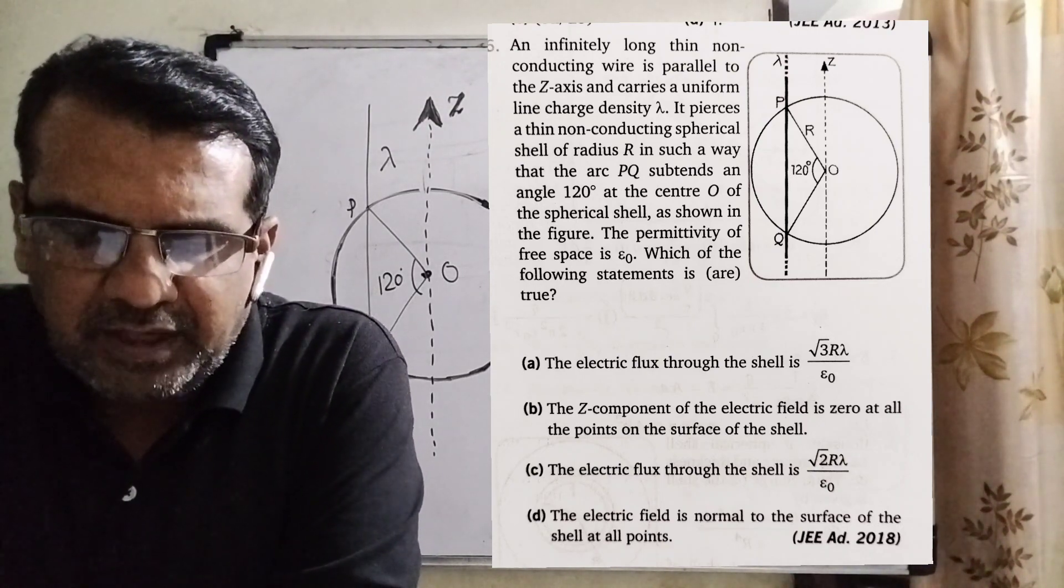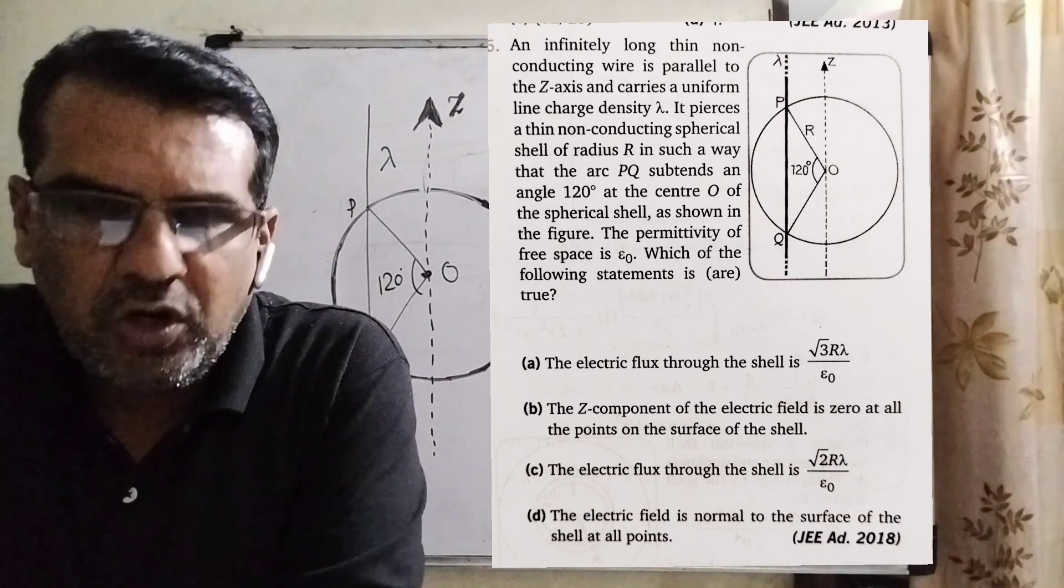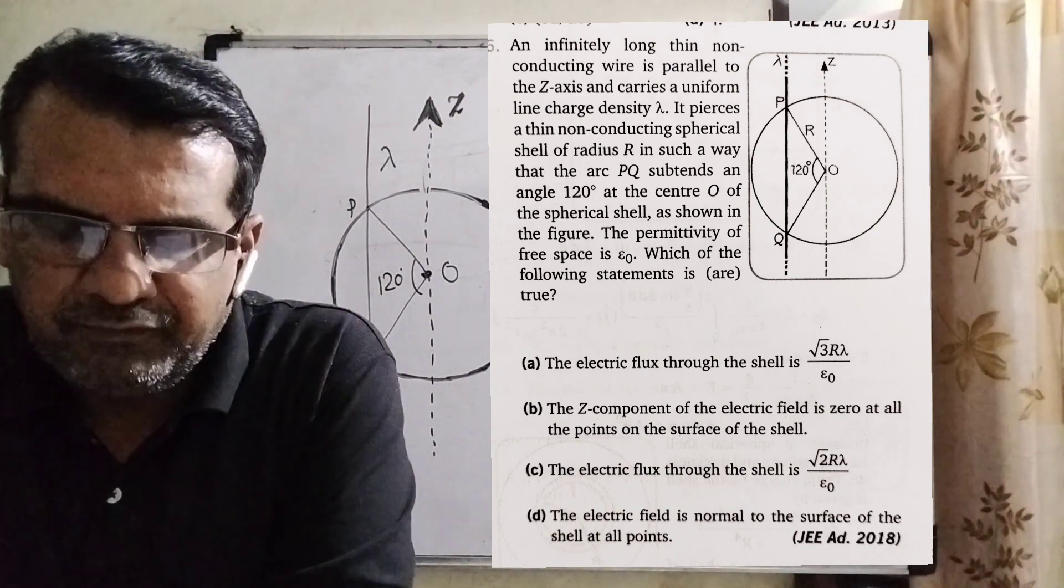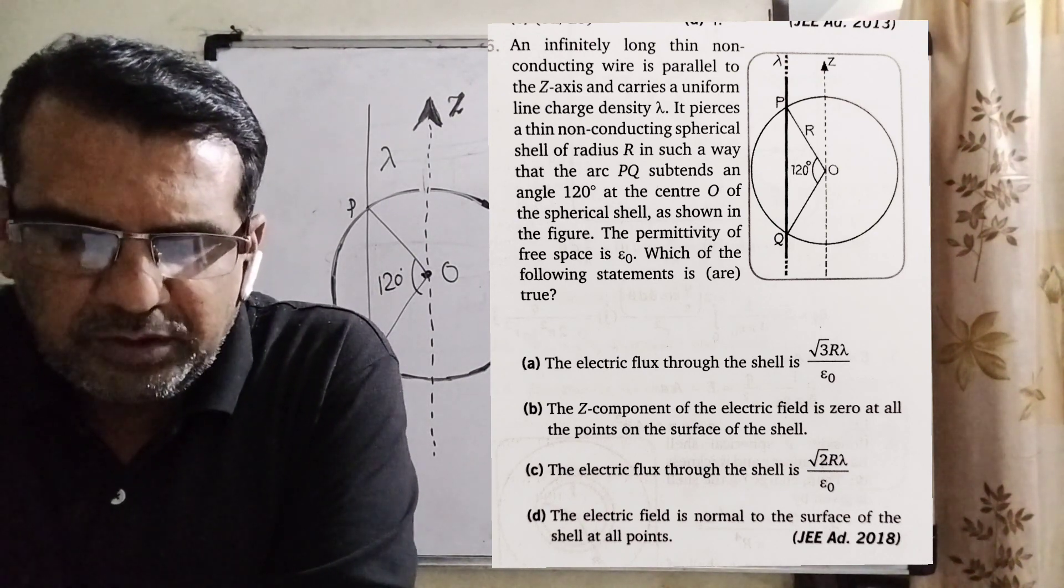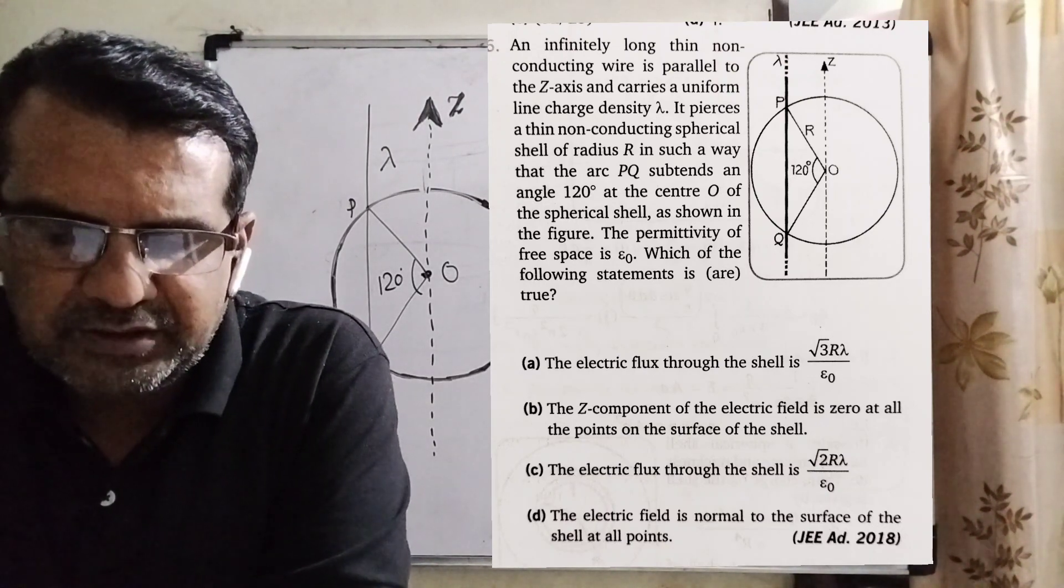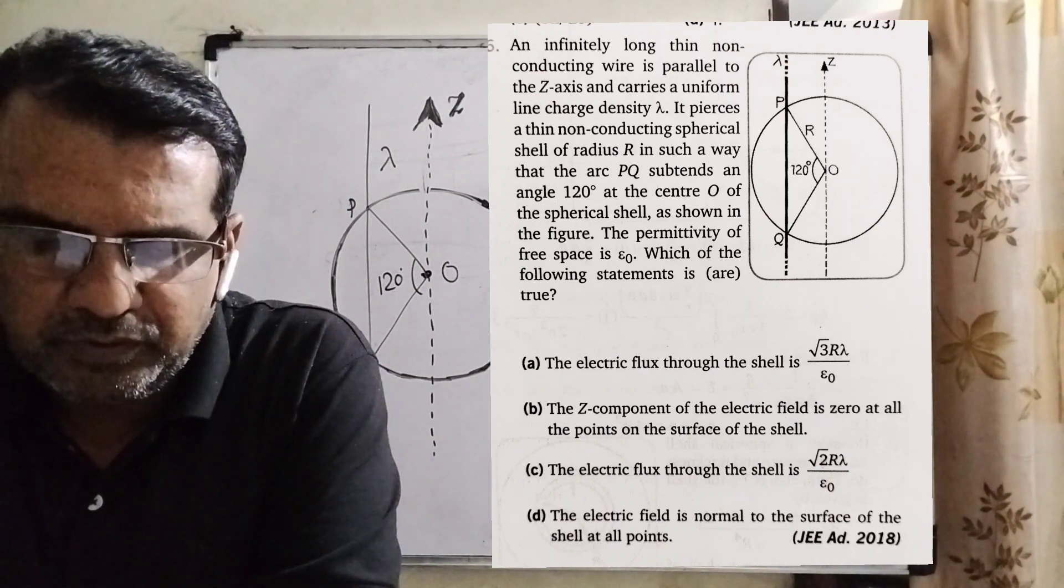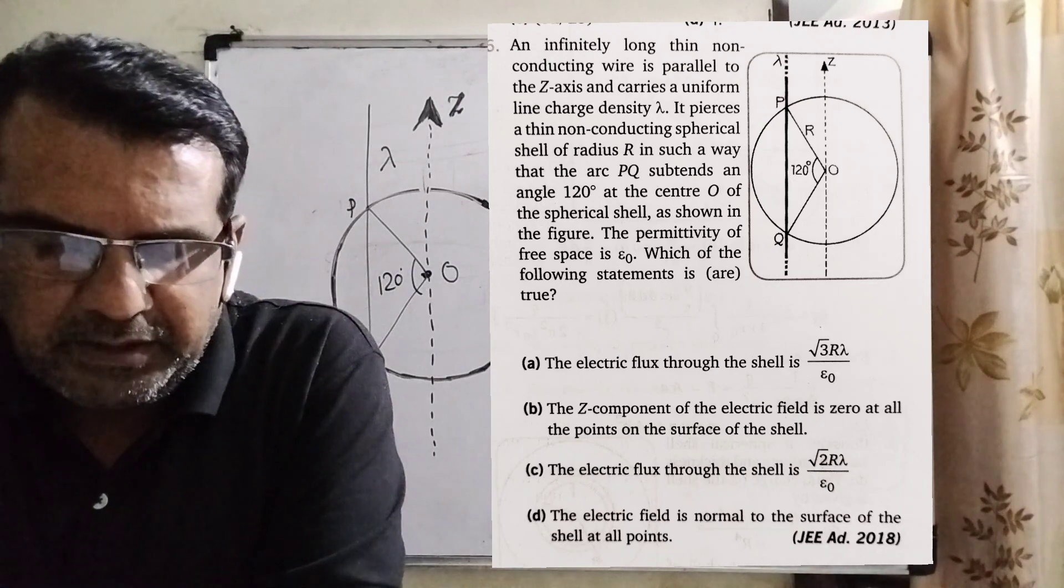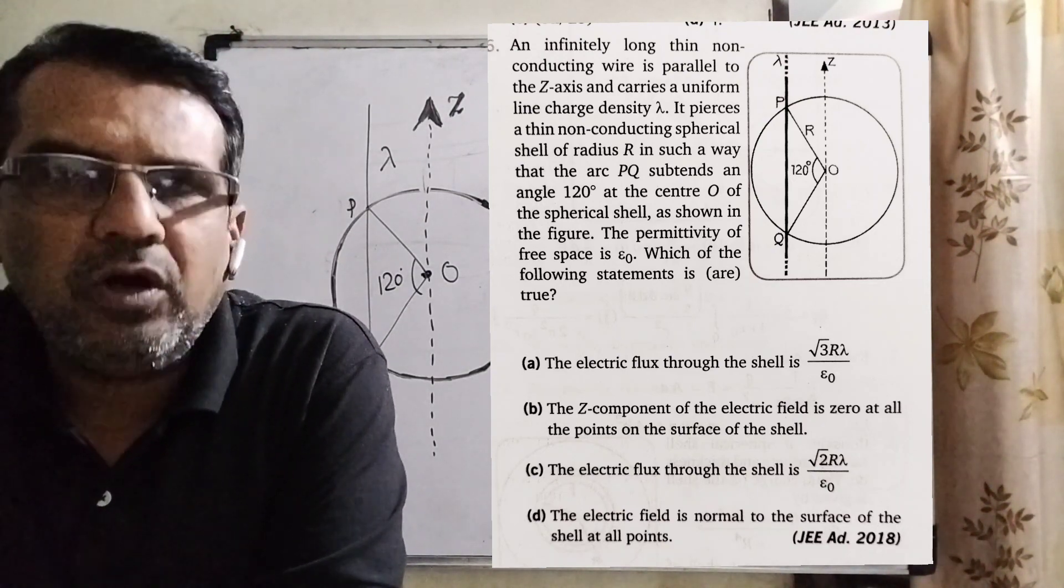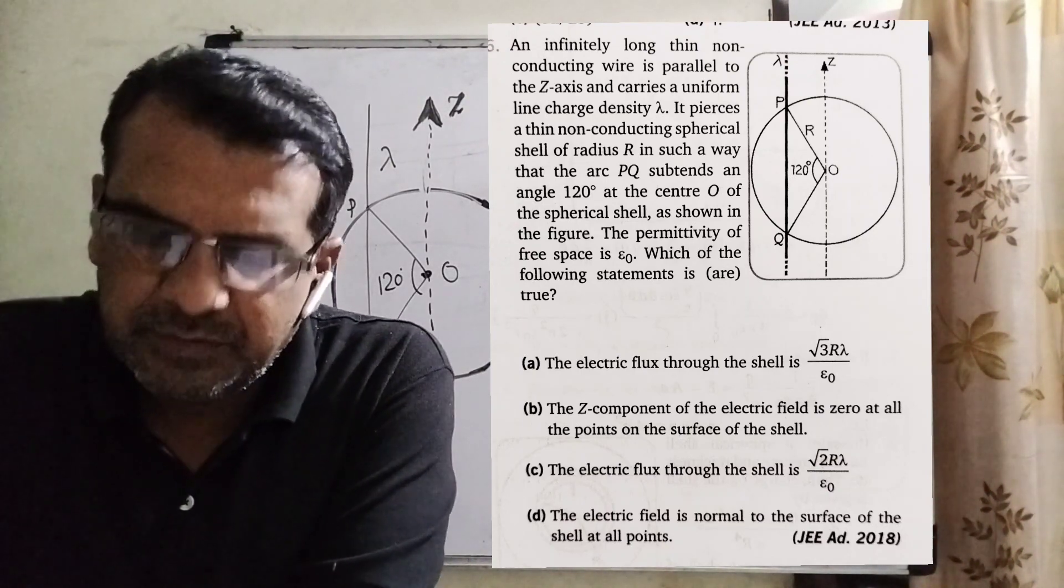Which of the following statements is true? This is an MCQ, multiple choice question. Option A: The electric flux through the shell is root 3 R lambda over epsilon zero. Option B: The z-component of the electric field is zero at all points on the surface of the shell. Option C: The electric flux through the shell is root 2 R lambda over epsilon zero. Option D: The electric field is normal to the surface of the shell at all points. This question is asked in JEE Advanced 2018.